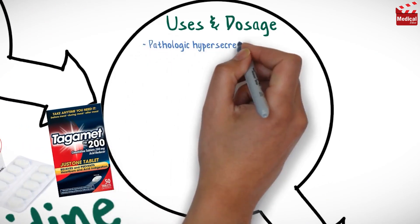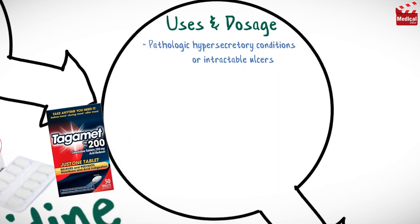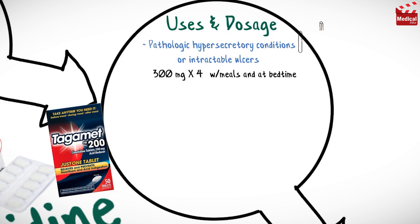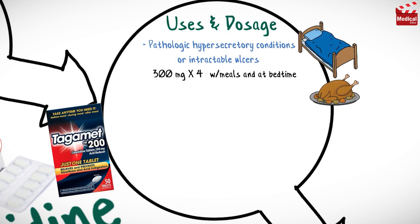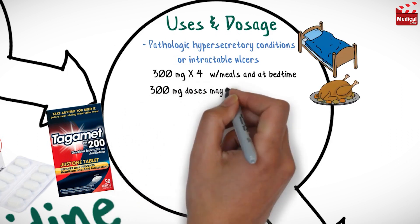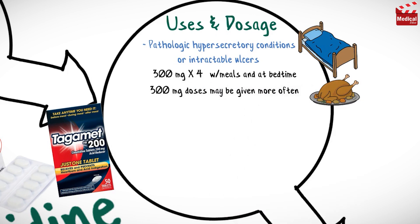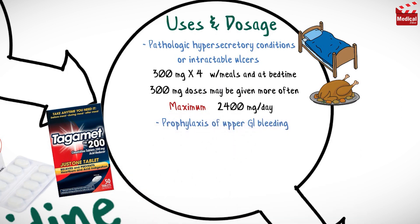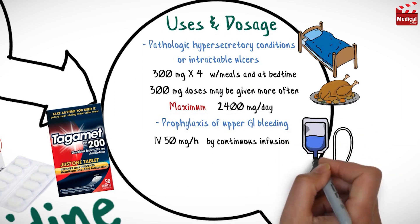And for pathologic hypersecretory conditions or intractable ulcers, the usual dose for adults is 300 mg 4 times per day with meals and at bedtime. If needed, 300 mg doses may be given more often, to a maximum of 2,400 mg per day. For prophylaxis of upper gastrointestinal bleeding, the usual dose for adults is 50 mg per hour by intravenous continuous infusion.